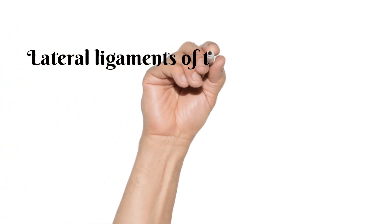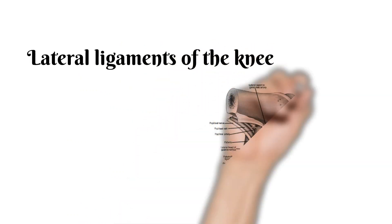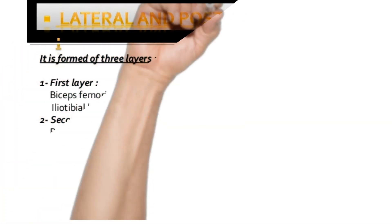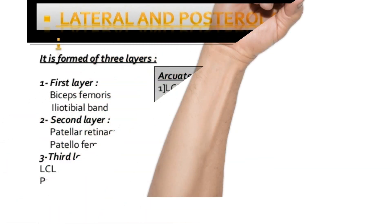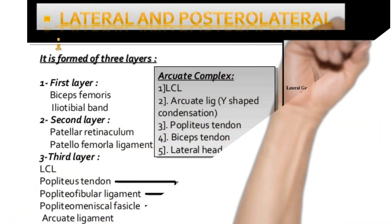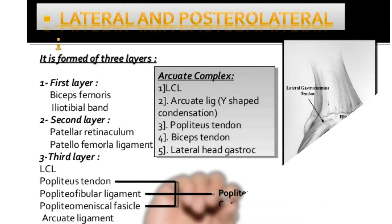Now for the structures around the lateral aspect of the knee, the layers are very important. It consists of three layers: Layer 1 consists of the iliotibial band and biceps femoris. Layer 2 consists of the patellar retinaculum and patellofemoral ligament — the common peroneal nerve lies between layer 1 and layer 2. Layer 3 is divided into superficial and deep components: superficial consists of the LCL and fabulofibular ligament, while deep consists of the arcuate and coronary ligament, popliteus, popliteofibular ligament, and capsule.